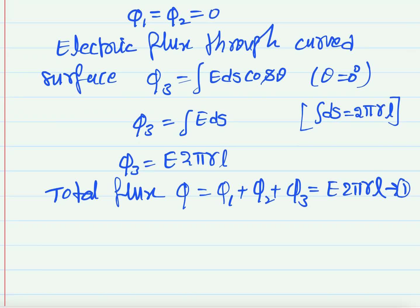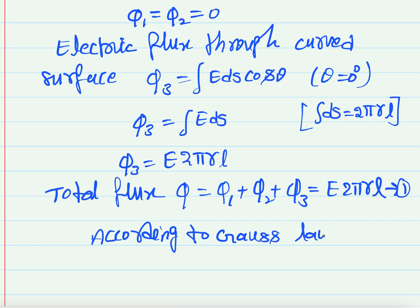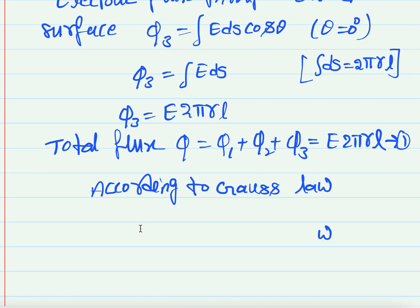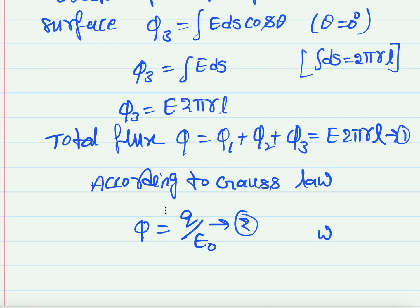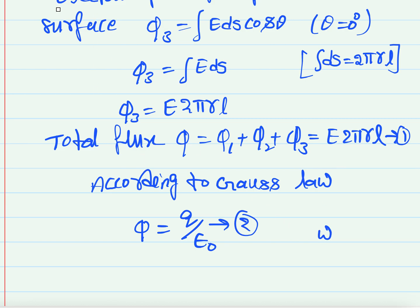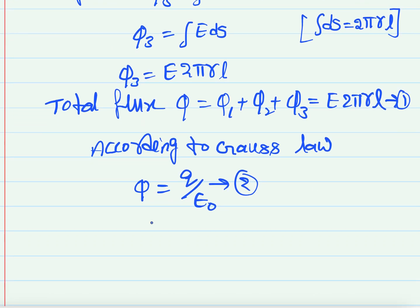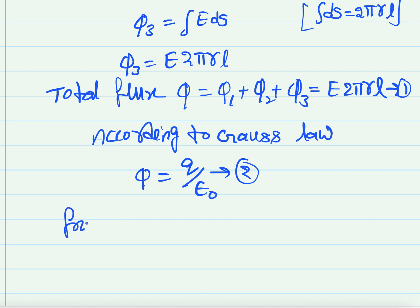According to Gauss's law, the total flux φ = Q/ε₀. This is equation 2. From equations 1 and 2, the left-hand sides are equal, so we can equate the right-hand sides.